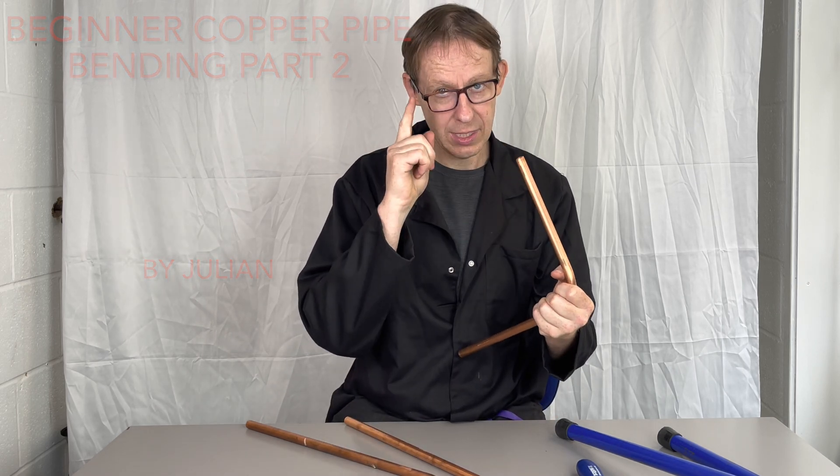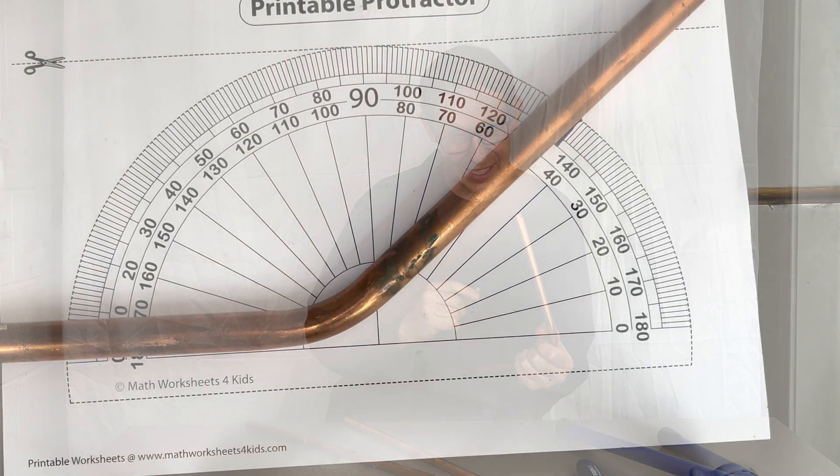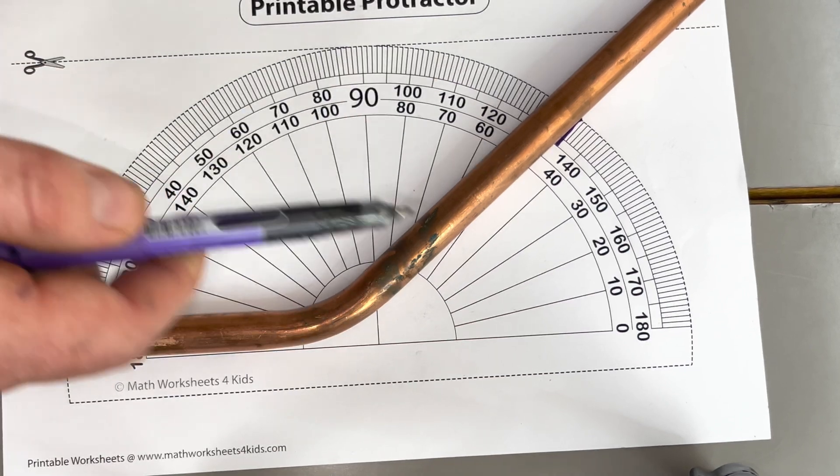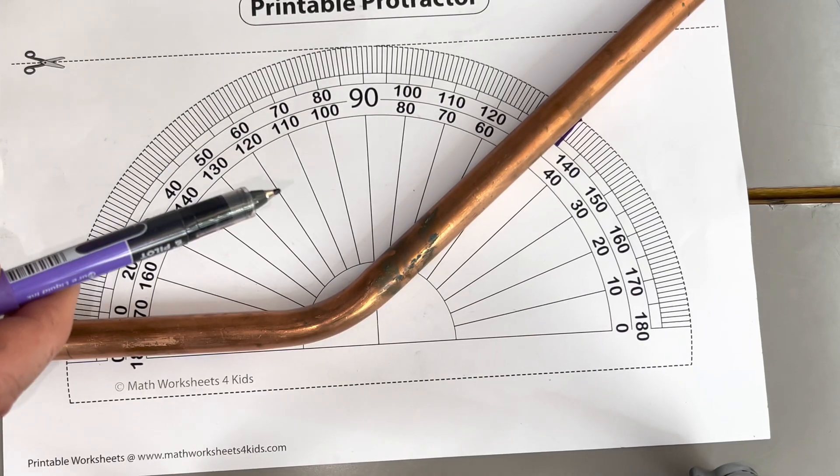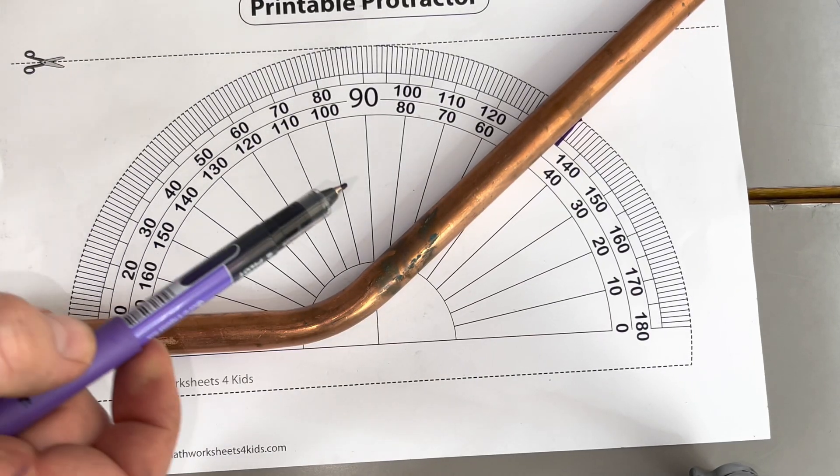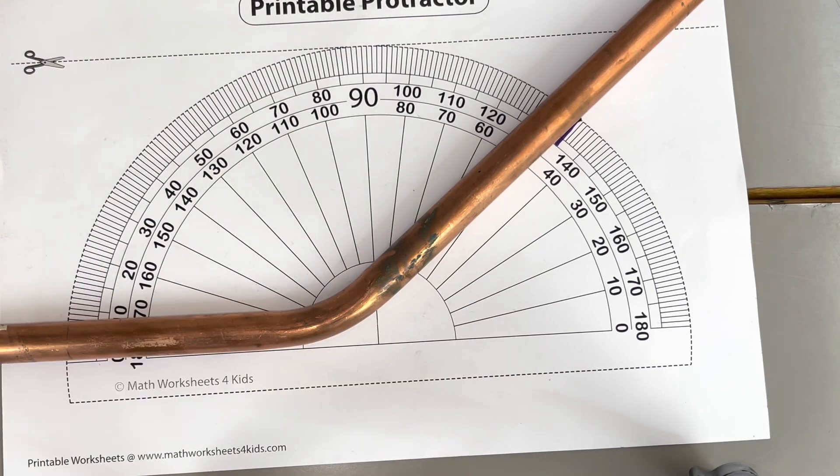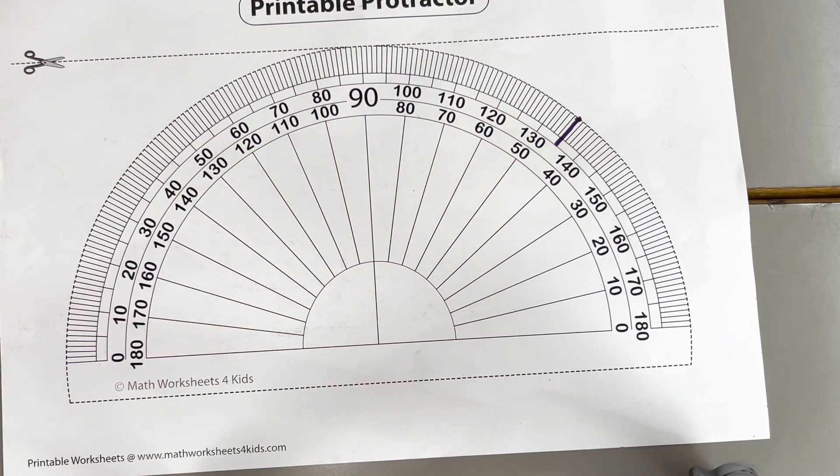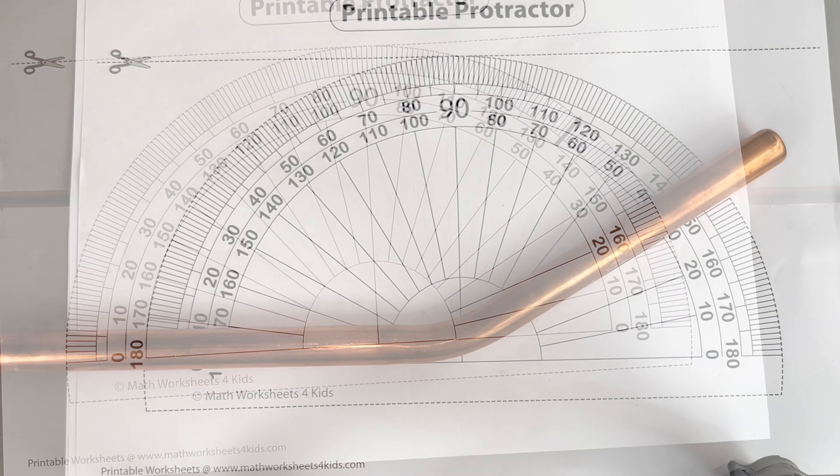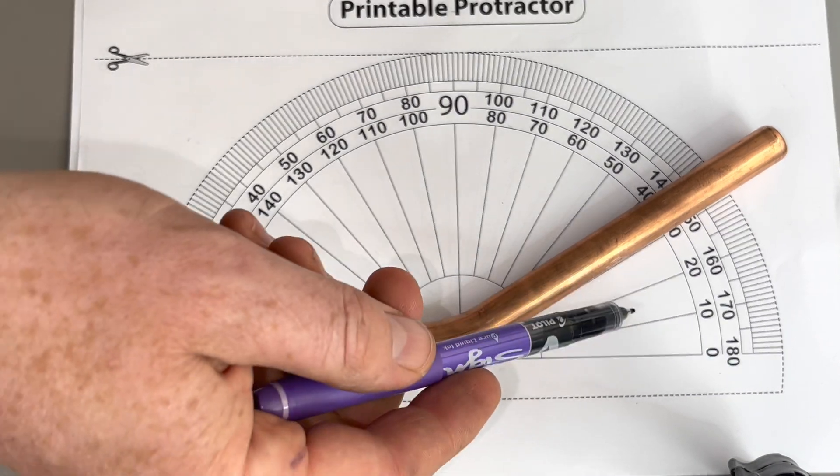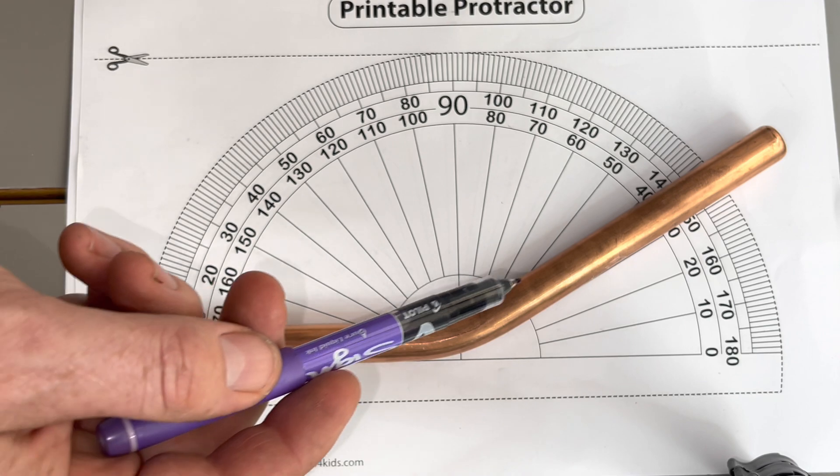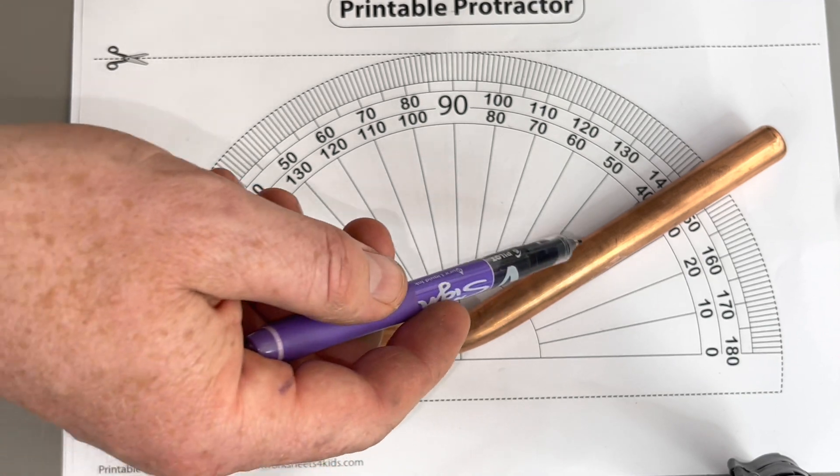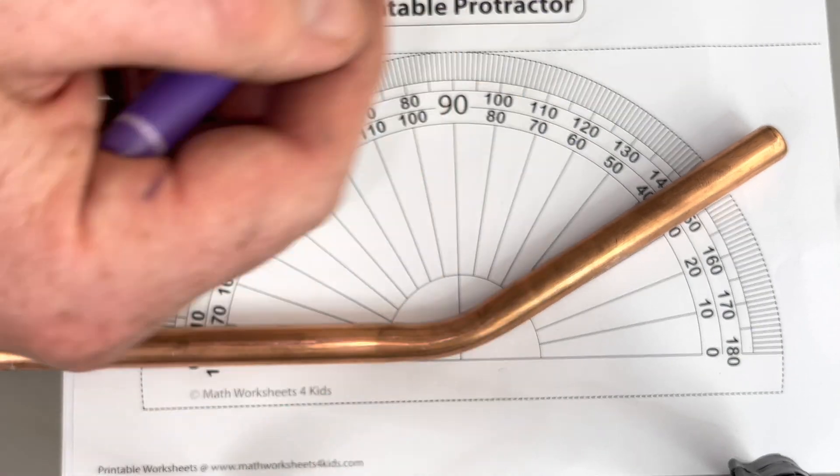Be mindful, a 45 degree bend can also be referred to as a 135 degree bend if measured from this angle. Be mindful, a 30 degree bend is measured from this angle, but some people refer to it as 150 degrees because they measure it from this angle.